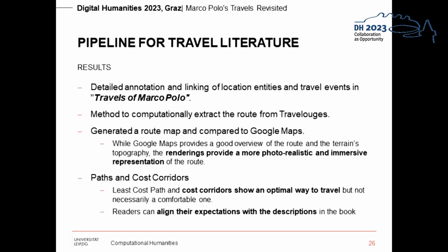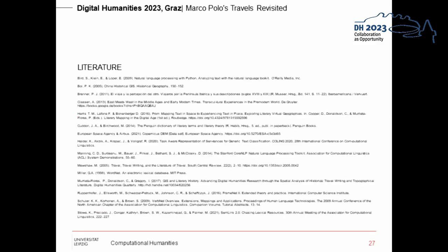With the demonstration of this prototypical workflow for the visualization of routes described in Marco Polo's Travels, many potentials but also challenges become apparent. The NLP methods we presented are not optimal and not directly applicable to other works of travel literature. Therefore, we would like to invite you to use the offered gold standard in the future to participate in developing suitable NLP methods for this workflow. While Google Maps provides a good overview of the route's topography, the renderings provide a more photorealistic and immersive presentation. For example, fact-checking using cost corridors can help understand if the described travels and times are realistic and plausible. We can experiment to see whether readers' route imagery while reading aligns with the actual situation in the field. Ultimately, we can study if such maps help to mentally encompass the entirety of the journey and thus generate a completely new experience. Thank you very much for your interest in our work.